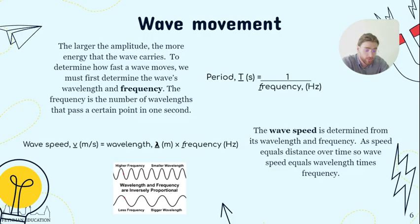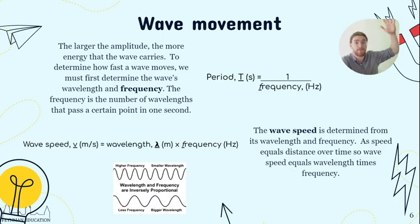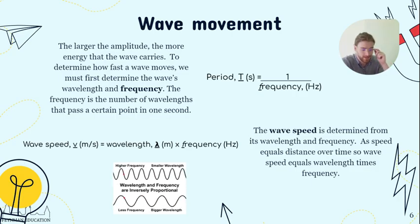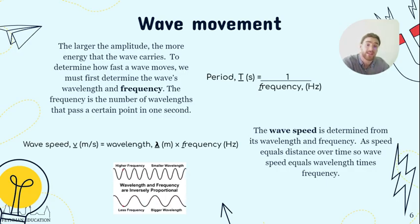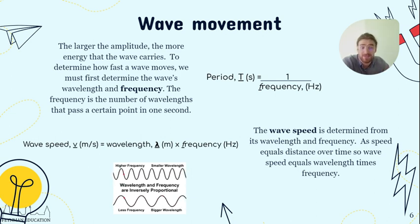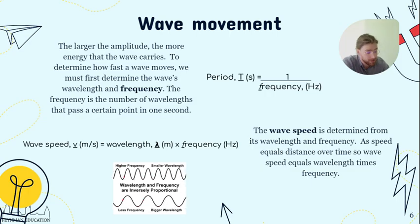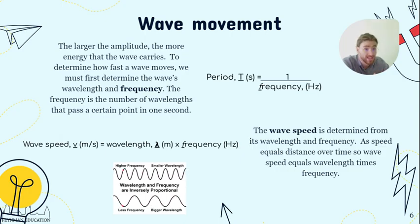When we're looking at wave movements, the amplitude is how much energy it's going to have. If it has more energy, it's going to be a bigger wave. To determine how fast the wave is moving, the speed, we said that is going to be the wavelength multiplied by the frequency. Frequency is measured in Hertz, wavelength is measured in meters, we use that word lambda for wavelength, and wave speed is meters per second. Period is going to be one divided by the frequency, and the frequency is the number of wavelengths that pass a certain point in one second.